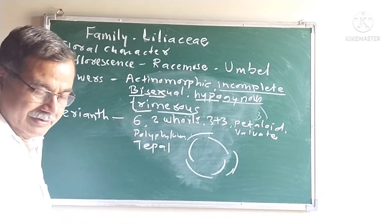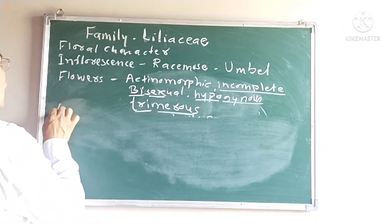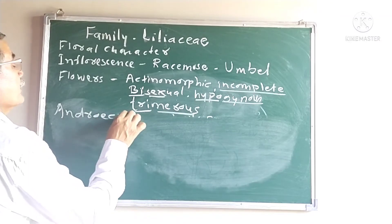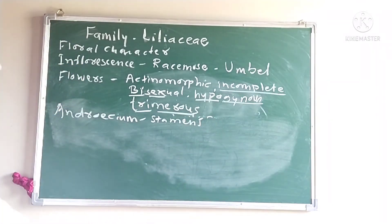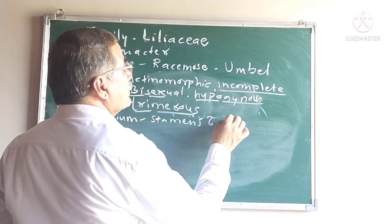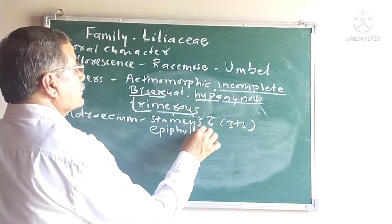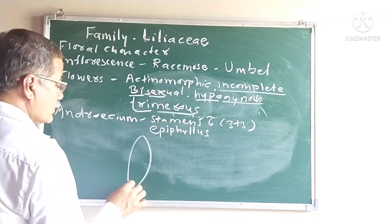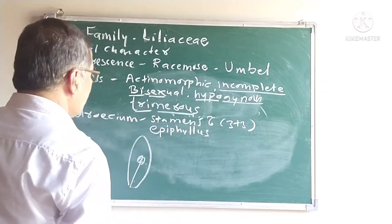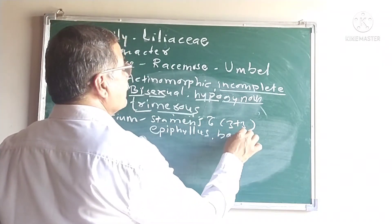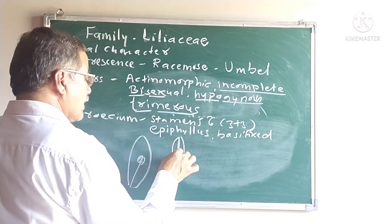Next we are going to see the androecium. The same is known as the stamens. Individual member of the androecium is stamen. Stamens are six but there are either three in each. Stamens are epiphyllous. This is a perianth lobe and the stamen is inserted joined close to the tepals, known as epiphyllous stamens. And stamens are basifixed. Basifixed means the anther lobes, the filament is connected to the anther lobe close to the base by the connective. It is known as basifixed.